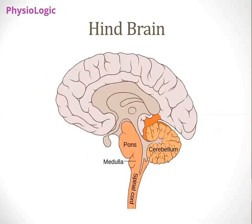To summarize the hindbrain: you can visualize pons, medulla oblongata, and behind these structures is the cerebellum, and beneath the medulla oblongata is your spinal cord. Regarding the brainstem: midbrain, pons, and medulla are known as the brainstem. When we talk about pons, medulla, and cerebellum, we call it hindbrain. When we talk about midbrain, pons, and medulla, we call it brainstem.